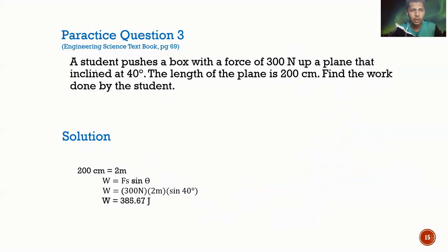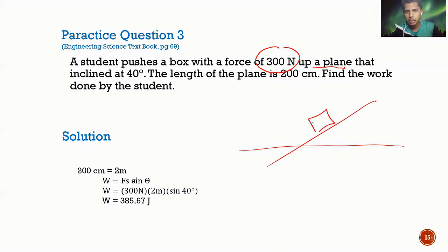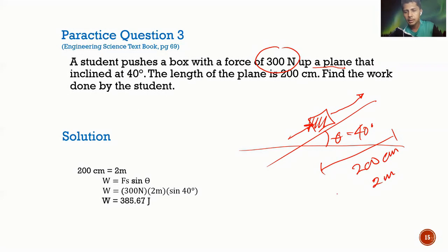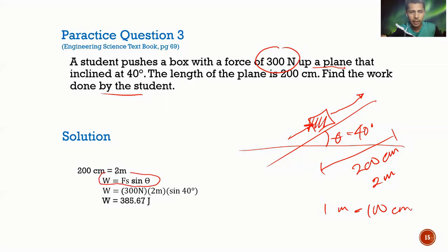Practice question 3: a student pushes a board with a force of 300 N up an inclined plane at an angle of 40 degrees. The length of the plane is 200 cm, which equals 2 meters. Since the object moves along the inclined plane in the direction of the force, we use W = Fs sin θ: W = 300 × 2 × sin 40° = 385.67 Joules.